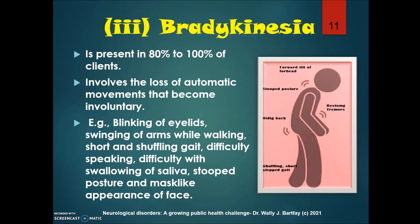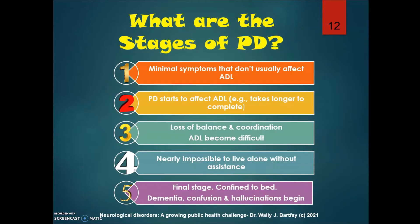There are five primary stages of Parkinson's disease. Stage one is the early stage with minimum symptoms that don't usually affect activities of daily living. Stage two starts to affect ADLs, which take longer to complete — for example, combing or brushing one's teeth. Stage three shows evidence of loss of balance and coordination, making ADLs more difficult. Stage four makes it nearly impossible to live alone without assistance. Stage five is the final stage where the individual is typically confined to bed, and dementia, confusion, and hallucinations begin.